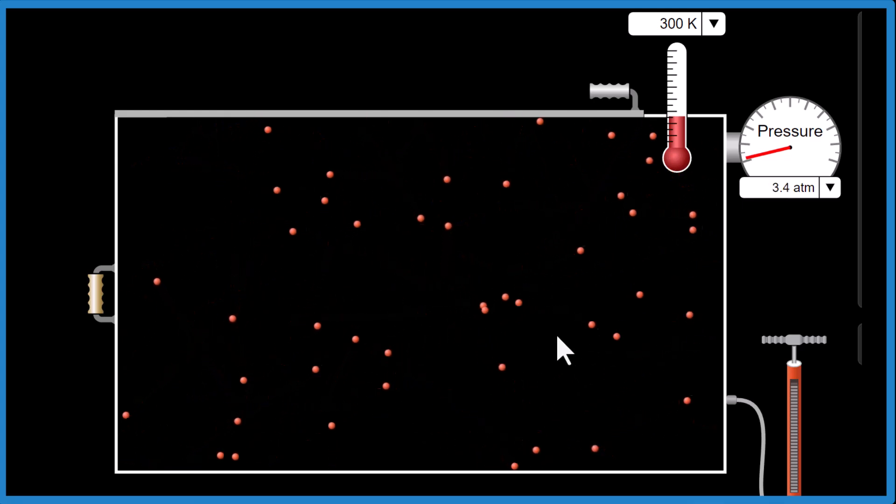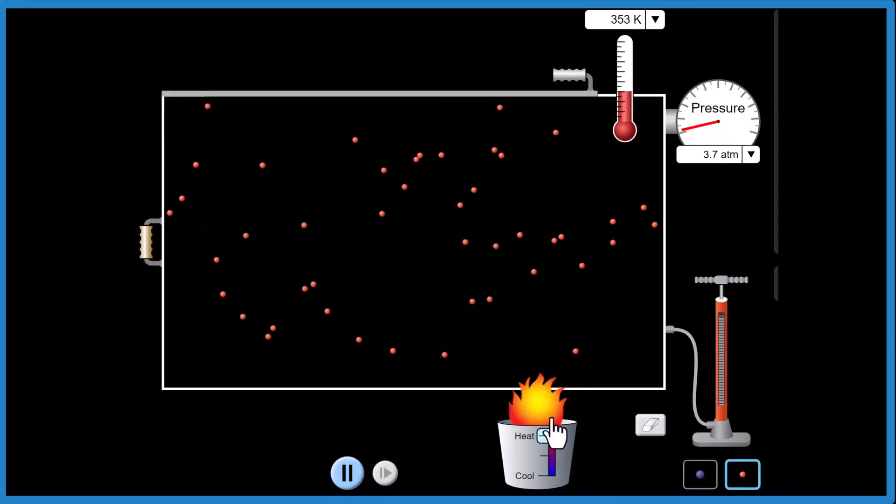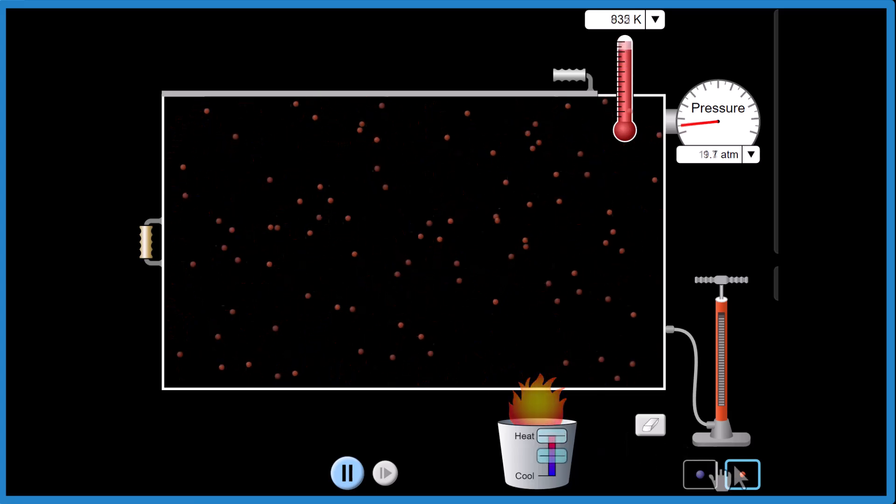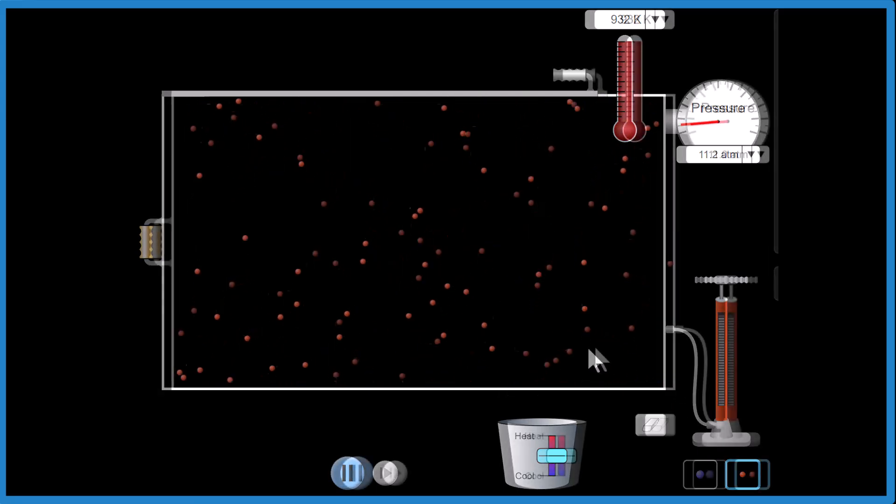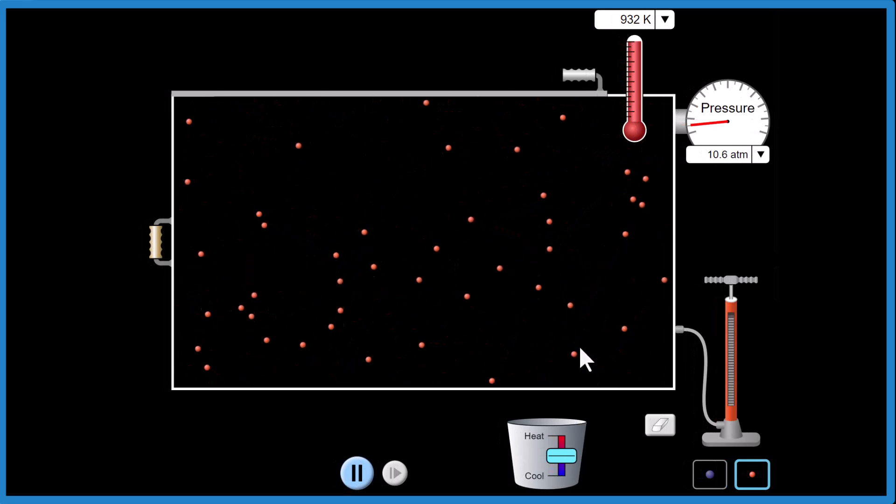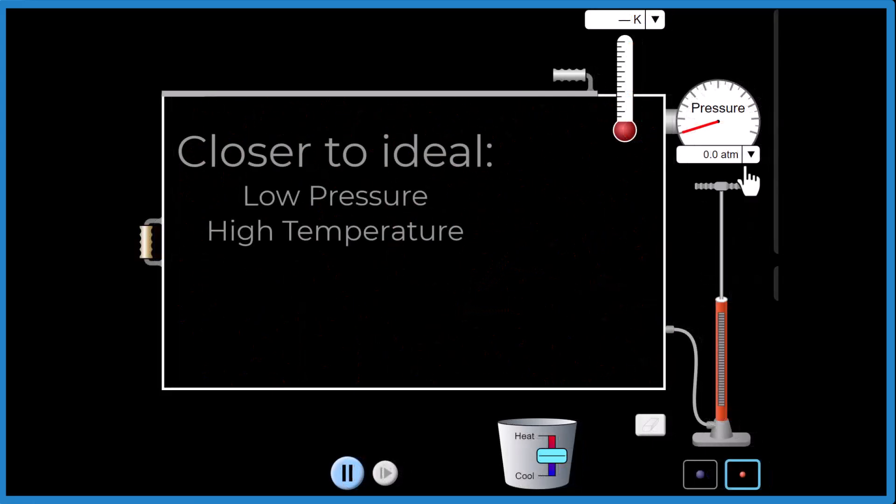Or if we increase the temperature, they start moving faster. And it's even harder for them to attract or repel each other when they're moving that quickly. So that's the second condition. Since the molecules don't attract or repel at higher temperatures, we're closer to that ideal.